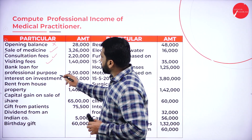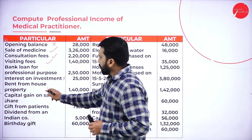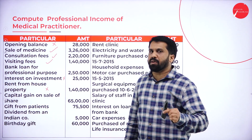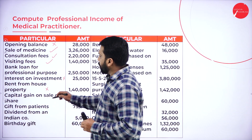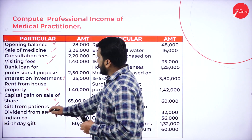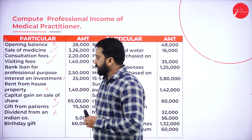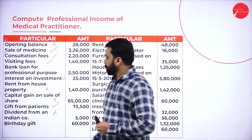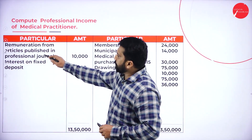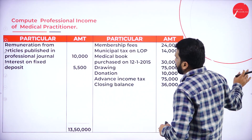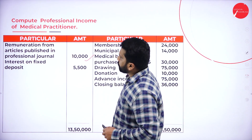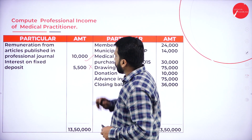Rent from house property — that is personal. Capital gain on sale of shares — again, it will not come. Gift from patient — yes, it will come. Dividend from an Indian company — it is exempted and not part of your profession. Birthday gift — it is personal. Remuneration from an article published in a professional journal — we have to take 10,000. Interest on fixed deposit — not part of your income.